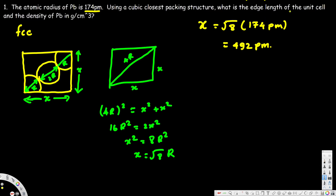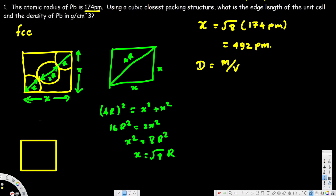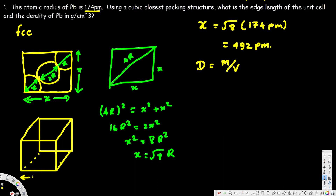They are also asking for the density. The equation for density is mass divided by volume. First we can find the volume, because the face-centered cubic structure is shaped like a cube. The edge length is x in all directions — height, width, and length are all equal. So the volume is x cubed. We already found x = √(8) · r, and if we cube that expression we get the volume.